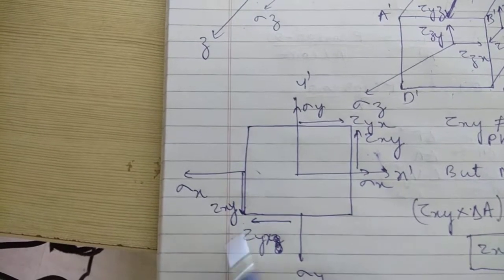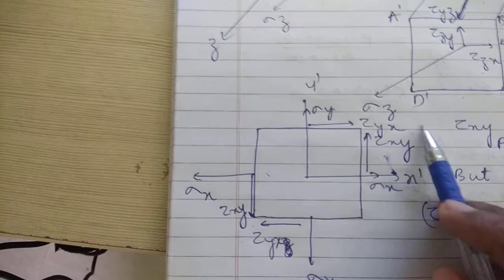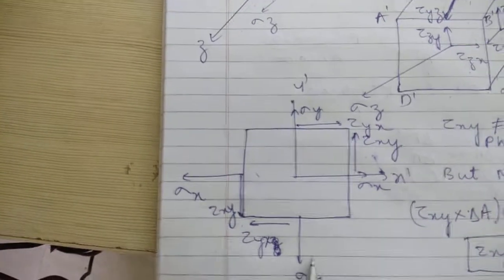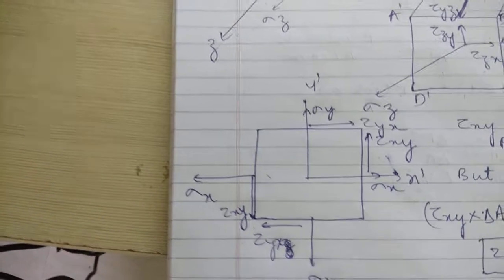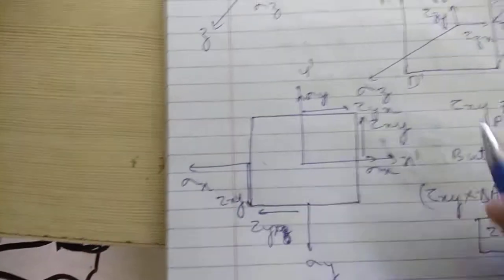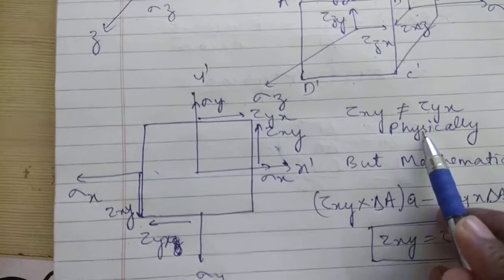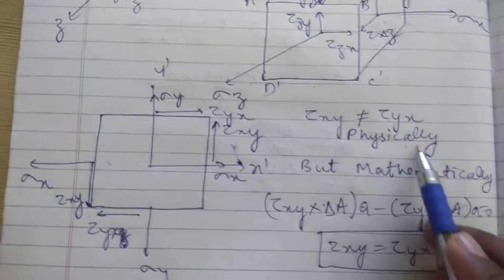Tau xy, and similarly tau yx will be acting on this surface and it will shear it. Tau yx will act here. You know it's not physically exactly the same—you cannot say tau xy equals tau yx physically—but mathematically they come out to be the same.